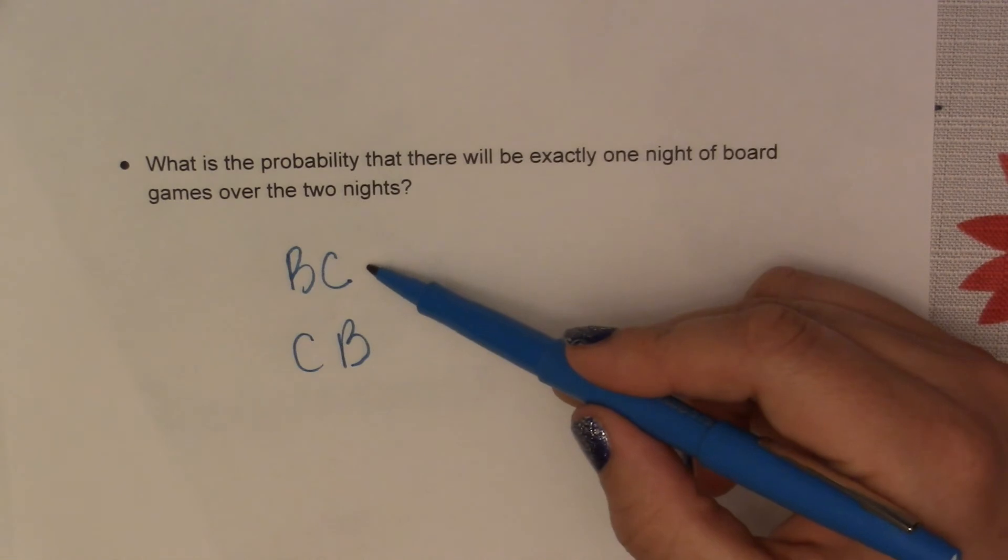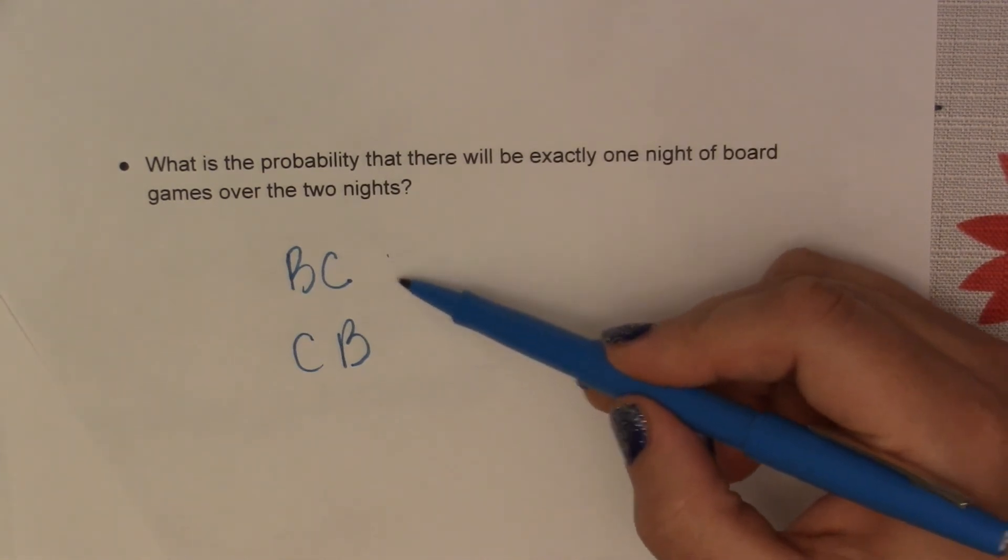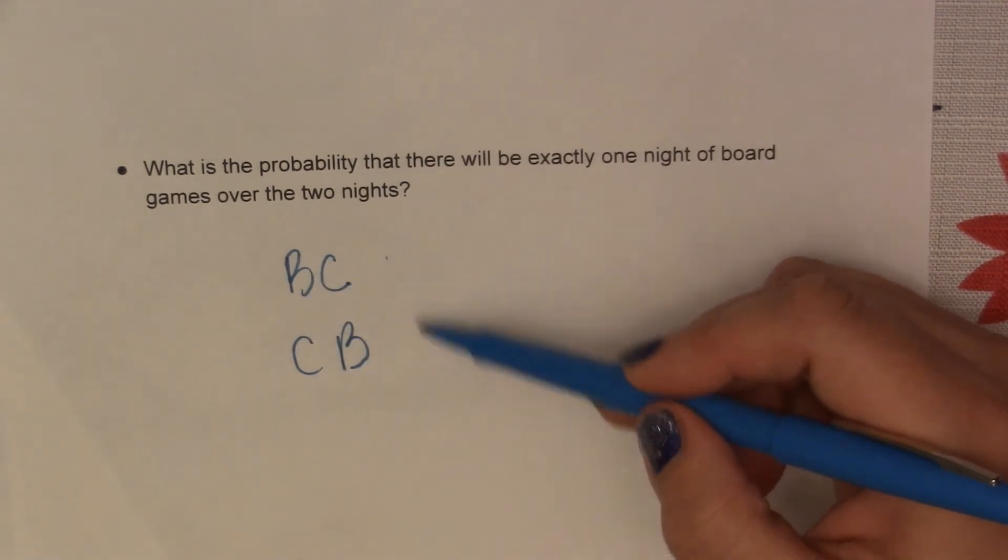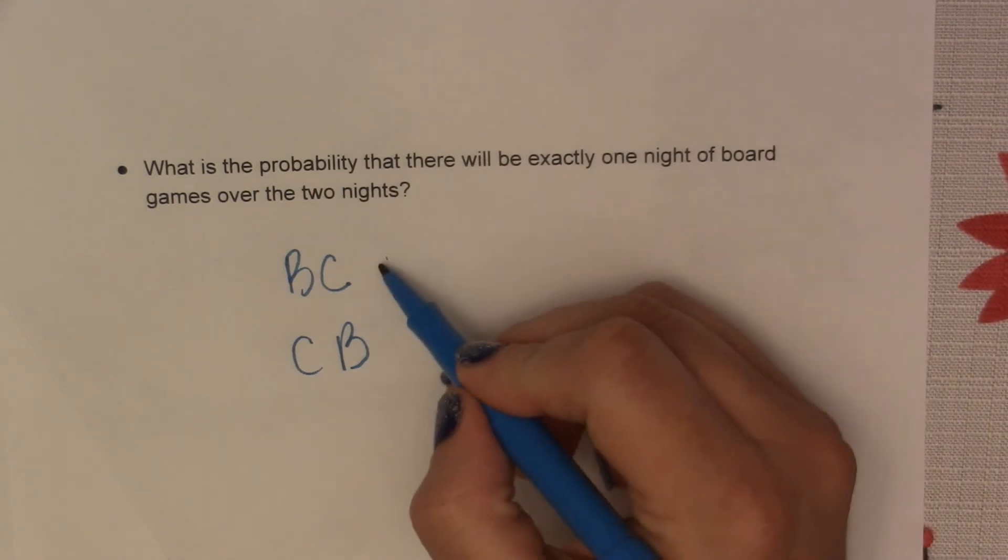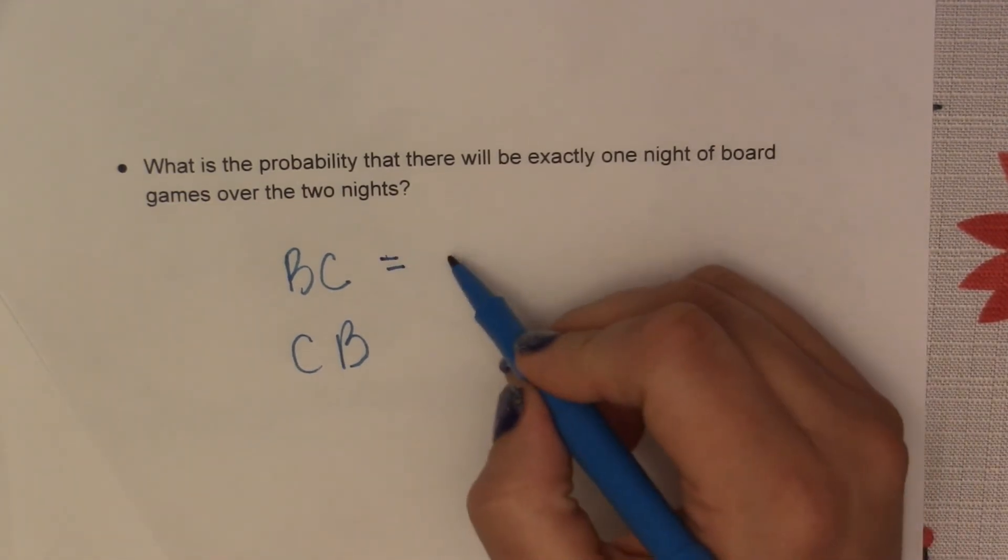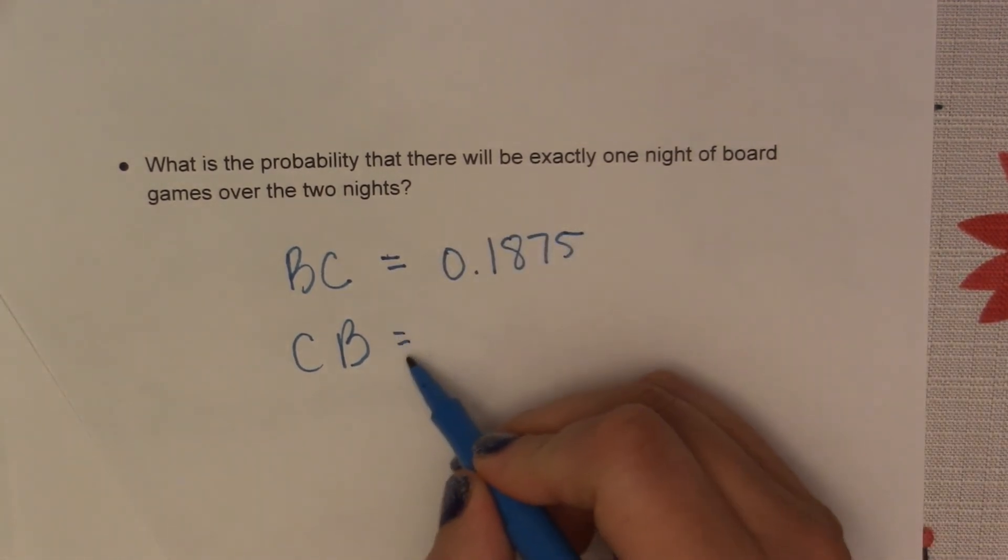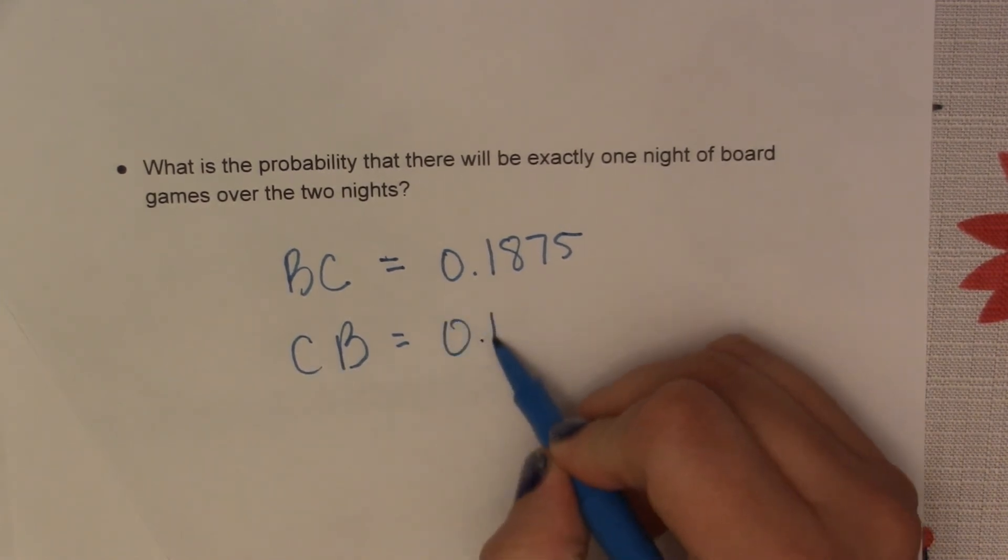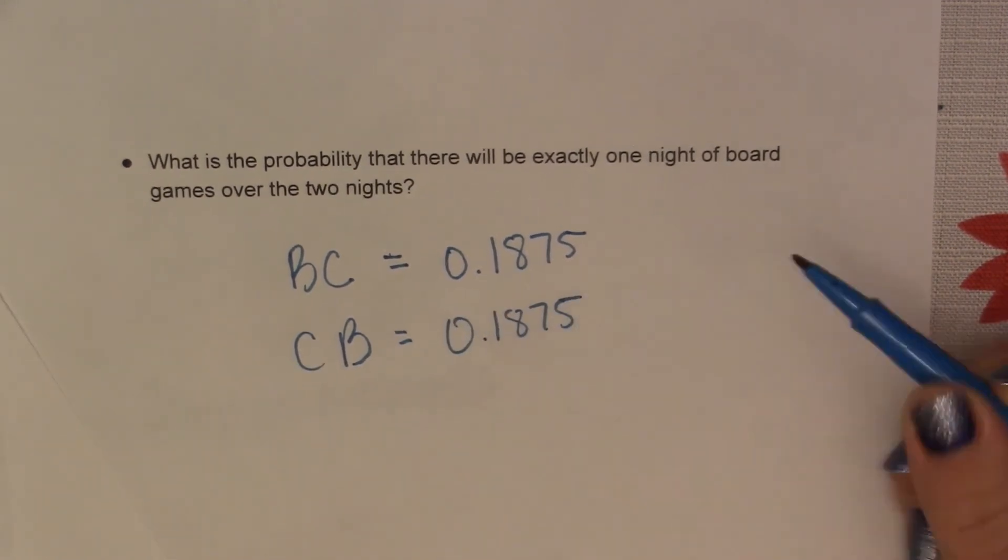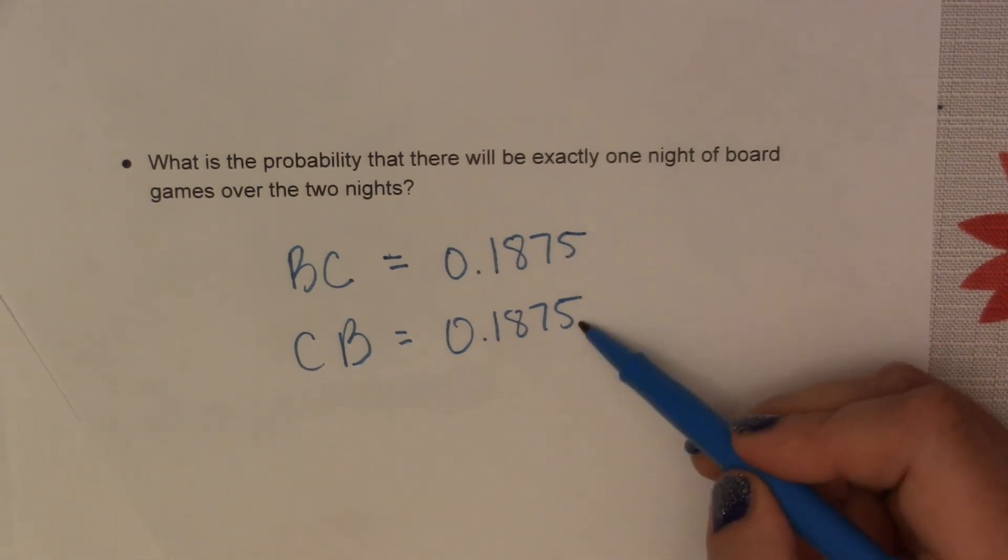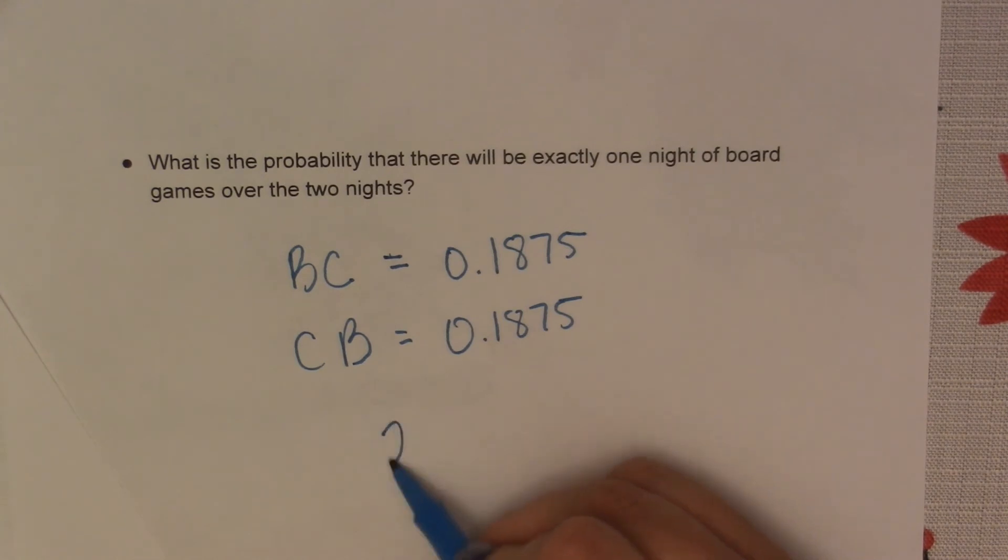So we're going to list out these probabilities, and then if we're talking about the two nights combined, we're going to combine the two probabilities together. So our probability for getting a board game and then a card game was 0.1875. And then we had found the probability of a card game and board game as 0.1875. So we could take this, we could add them together, or we could times this by 2 because it's the same number.